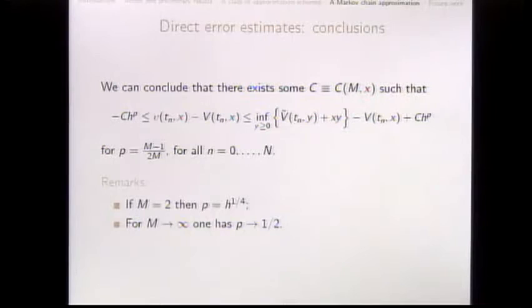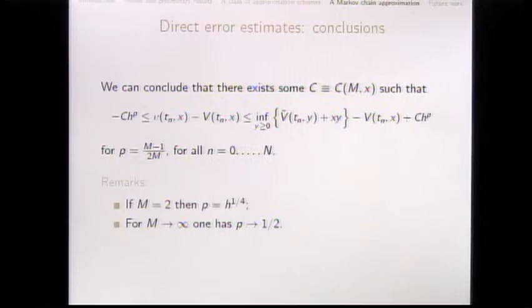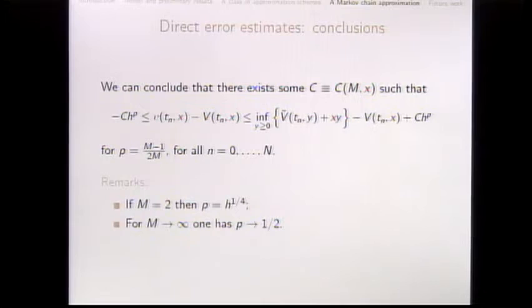As a remark: if we consider the Camilli–Falcone scheme with only two quadrature points (m=2), we recover order h^{1/4}, consistent with the existing literature. As we consider more precise Gaussian quadrature approximations, the order approaches h^{1/2} in the limit, which matches the error bound for deterministic problems.